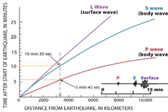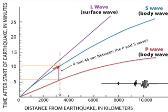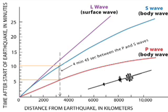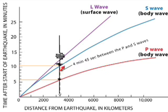In the example shown on the slide, the difference between the arrival time of the P wave and the S wave is about 4 minutes and 45 seconds. That falls only one place on the travel time curve. So this time difference of 4 minutes and 45 seconds indicates that the earthquake occurred about 3,300 kilometers away from that particular seismic station.